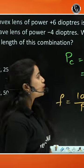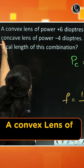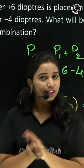Hey students, here we have a question: a convex lens of power +6 diopters and a concave lens of power -4 diopters. These two lenses are in contact, so what will be the final lens nature and focal length?